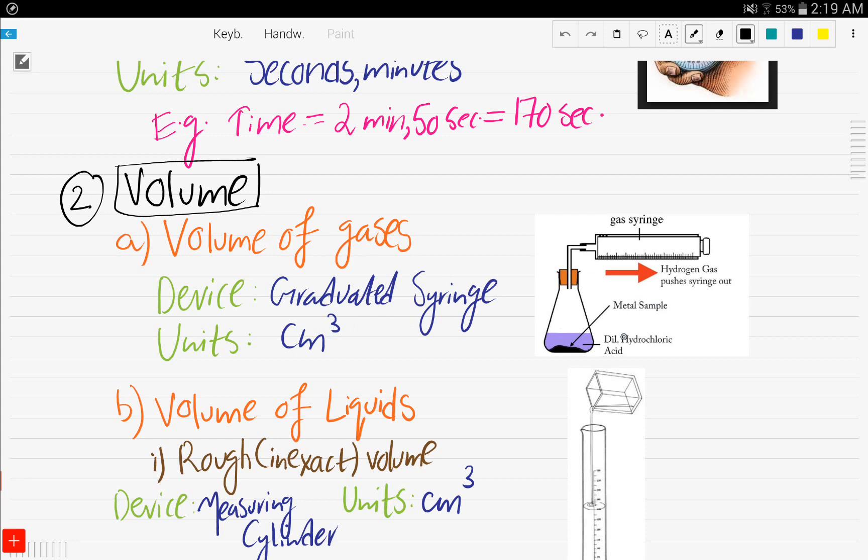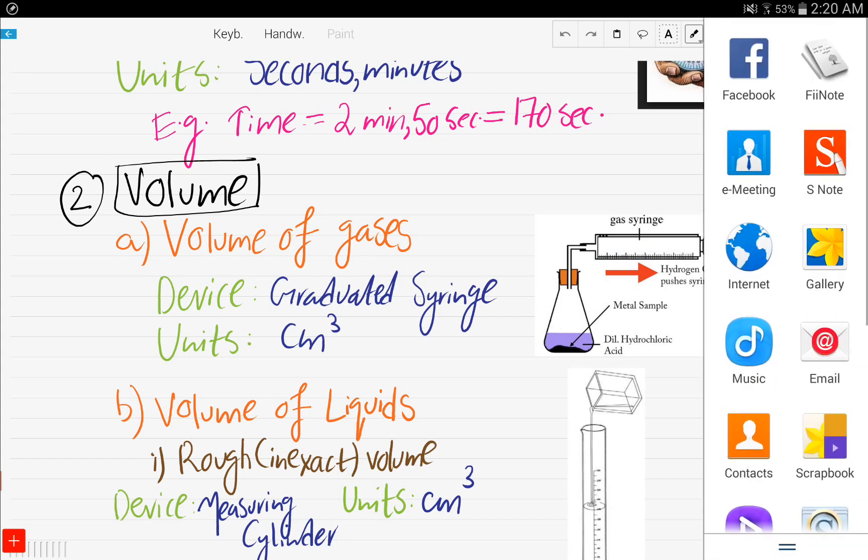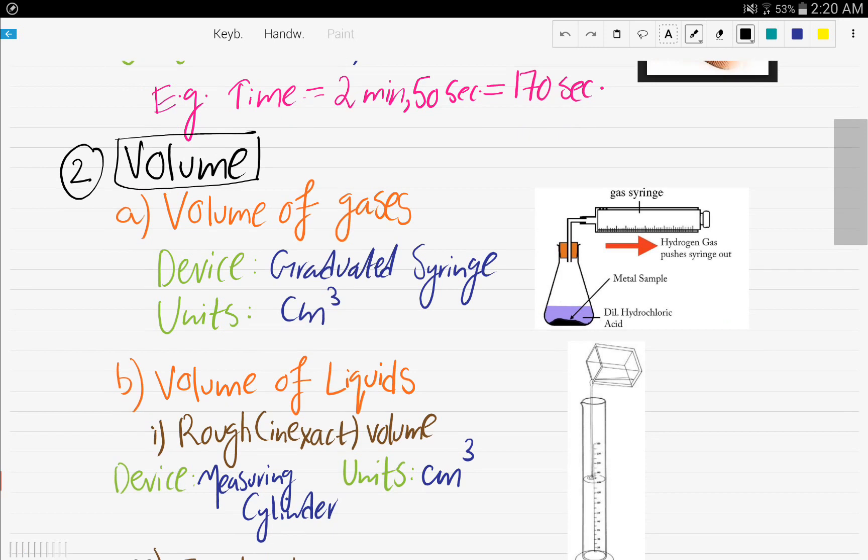As you can see here, here is a metal reacting with hydrochloric acid and they give out hydrogen gas. And so the hydrogen gas pushes the syringe out. And so you read the volume of the gas from the graduated gas syringe. And the reaction between metals and acids will be discussed in future chapters.